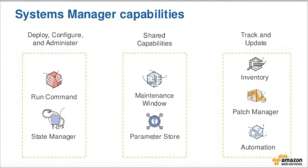Parameter Store allows you to store secrets like SSO keys, API keys, and secret keys for easy access. Inventory tracks the current status, version, and license details across 100 EC2 instances. Patch Manager applies patches, and Automation can connect and use all of these capabilities together.